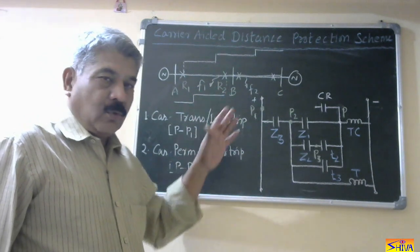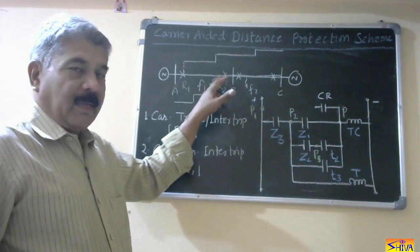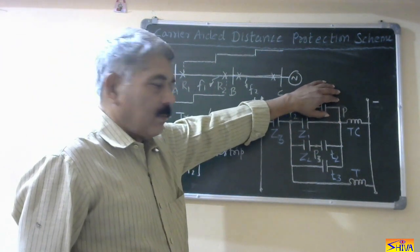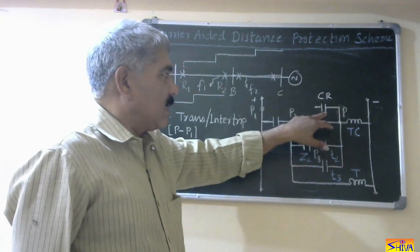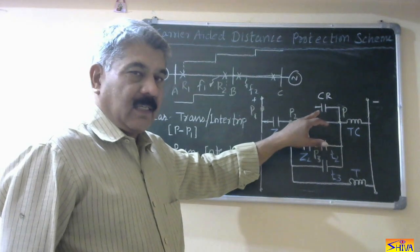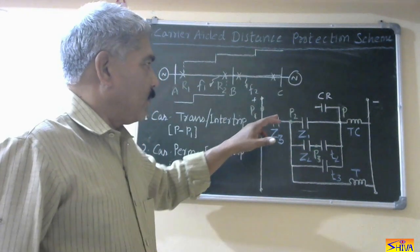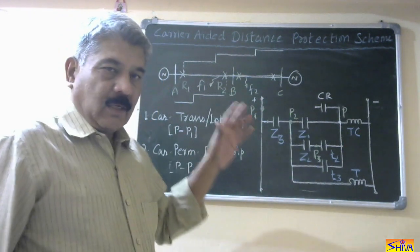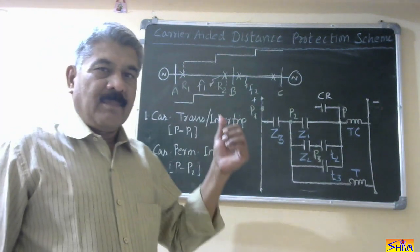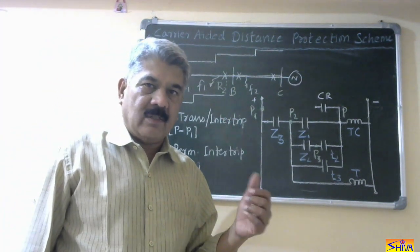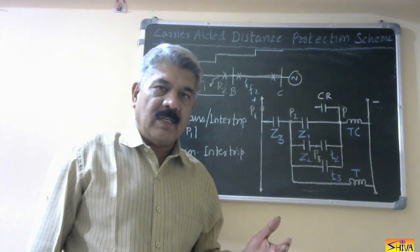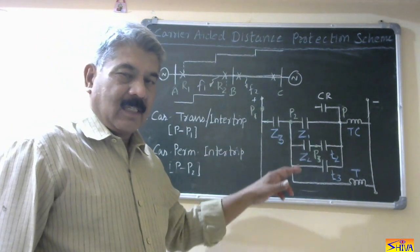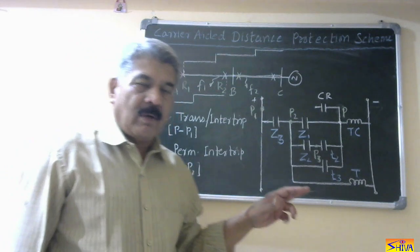If we do not use the carrier-aided distance protection scheme, F1 will be cleared in the second step. Now in this contact diagram, first we do not consider the DR contact — that is the carrier receive relay contact. If we do not use this contact, the scheme will be like this. We are assuming the relay has directional sense, so we are using a mho distance relay at R1 as well as R2. This is the contact diagram for a three-step distance protection scheme for a mho relay.